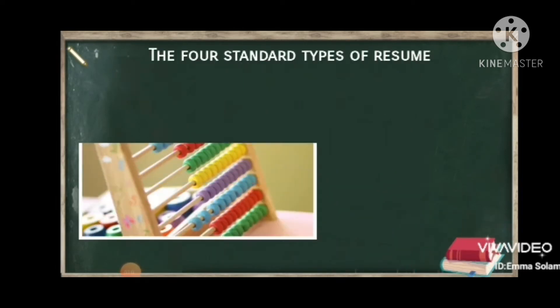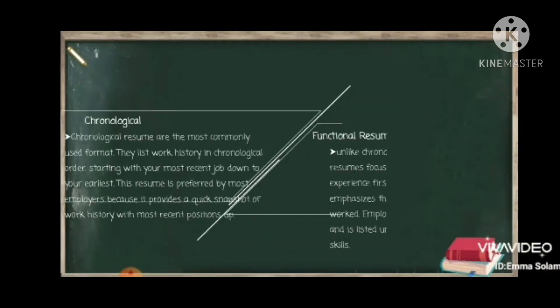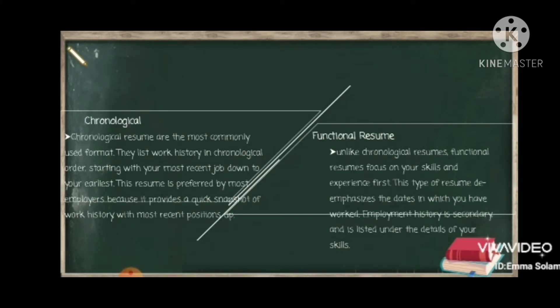Depending on the type of job you're applying to, there are four different formats you may apply. The four standard types of resume are: chronological, functional resume, combination resume, and targeted resume. Chronological resumes are the most commonly used format. They list work history in chronological order, starting with your most recent job down to the earliest. This resume is preferred by most employers because it provides a quick snapshot of work history with the most recent position.